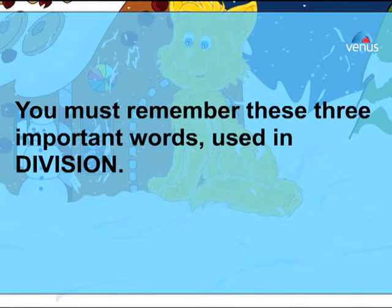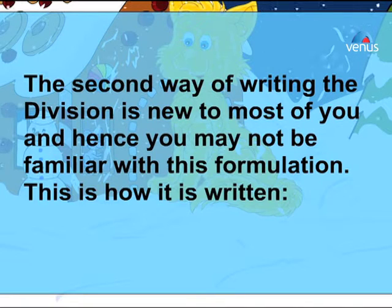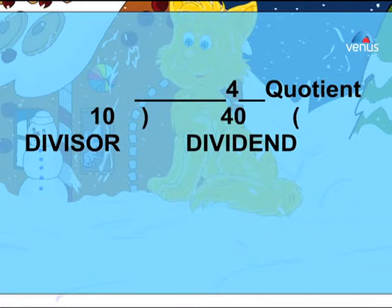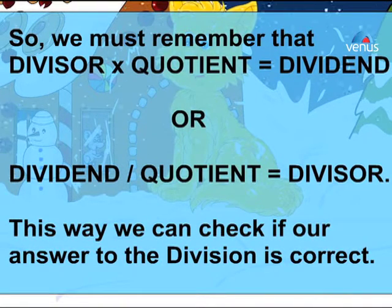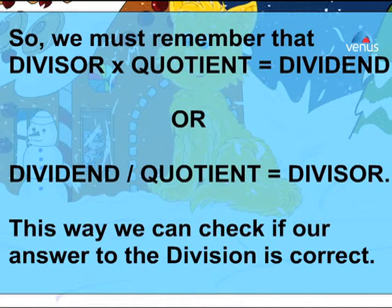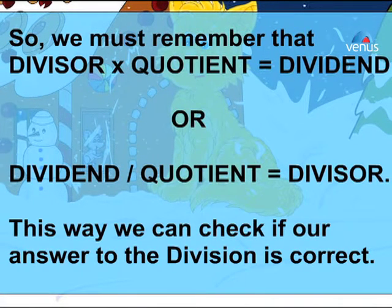The second way of writing division is new to most of you, and hence you may not be familiar with this formulation. This is how it is written: divisor 10, quotient 4, dividend 40. We must remember that divisor into quotient equals dividend, or dividend divided by quotient equals divisor. This way we can check if our answer to the division is correct.